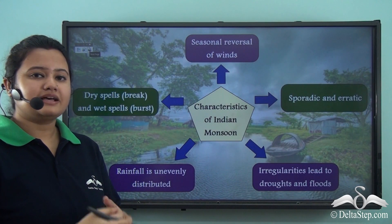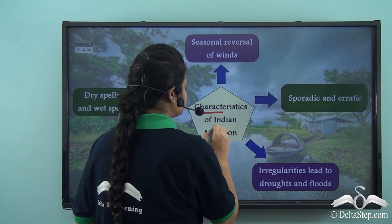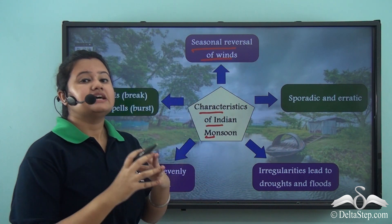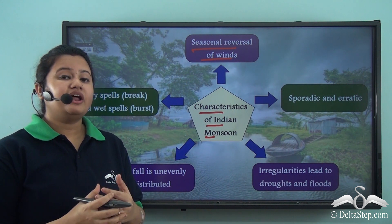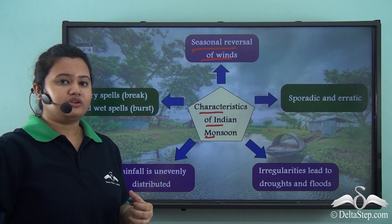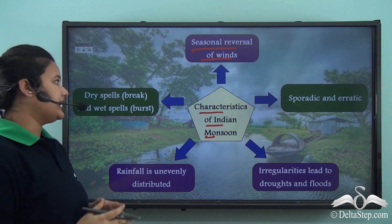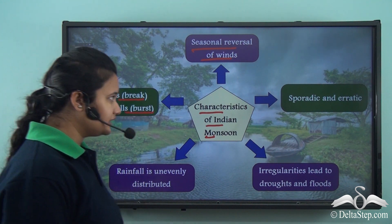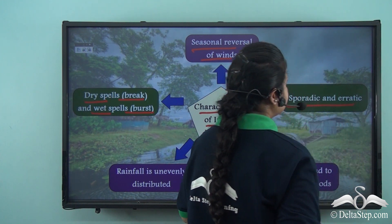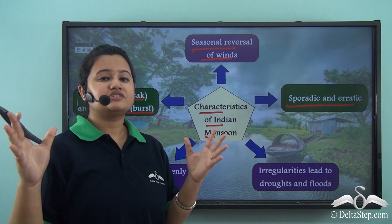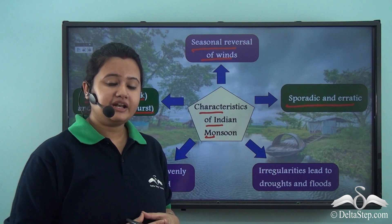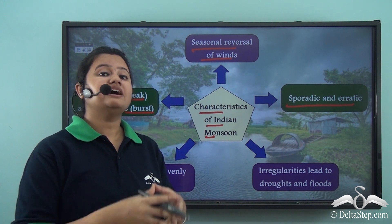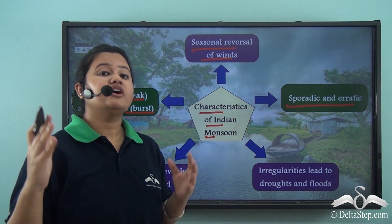Let us quickly summarize the important characteristics of Indian monsoon. First, Indian monsoon is characterized by seasonal reversal of winds — winds blow from sea to land in the south-west direction during summer, and from land to sea in the north-east direction during winter. Second, rainfall in India has dry spells, referred to as break in monsoon, and wet spells, referred to as burst of monsoon. Third, Indian monsoon is sporadic and erratic — not all of the country receives rain at the same time. The southernmost part is the first to receive rain and the last to observe withdrawal of monsoon winds, whereas the northernmost and northwestern part is the last to receive rain and the first to observe its withdrawal.